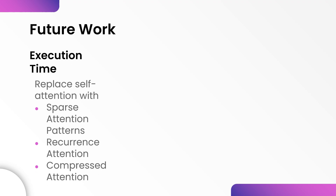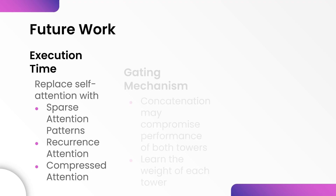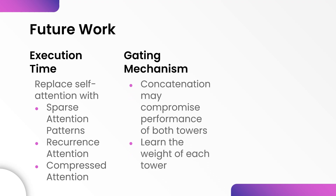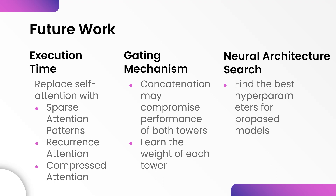Moving on to future work, the model can be further improved by the following methods. Even though the execution time has been decreased by 30% using CSP attention, it can be reduced further by replacing multi-head attention with alternative schemes such as sparse attention patterns, recurrence, or compression attention. Next, for the two-tower model, merging features by concatenating may compromise the performance of both towers; a simple gating mechanism can be implemented to learn the weight of each tower. Lastly, one possible reason the proposed improvised models did not perform as well as the pre-trained base model is because the hyperparameters used are not optimal. Neural architecture search can help to automatically find the best hyperparameters for the proposed models.